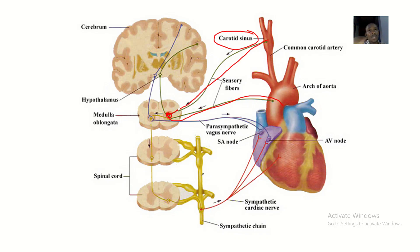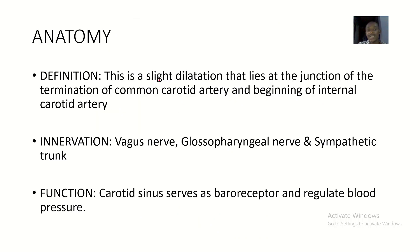From here you can start relating what the applied anatomy will be — something to do with slowing of the heart or headache, since it regulates pressure via receptors. So the definition: the carotid sinus is a slight dilatation that lies at the junction of the termination of the common carotid artery and the beginning of the internal carotid artery.